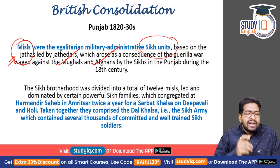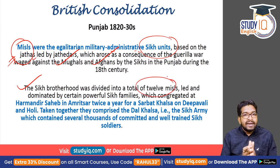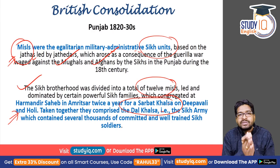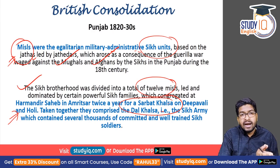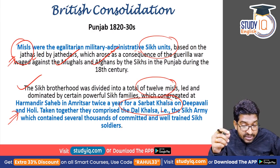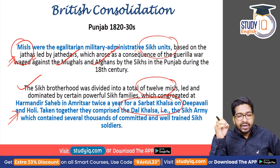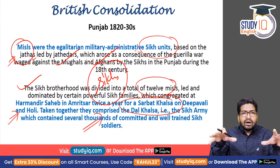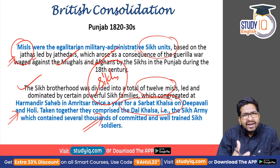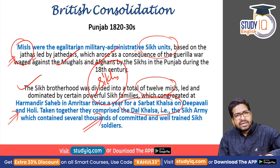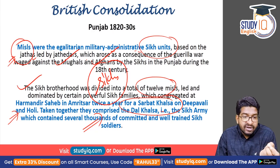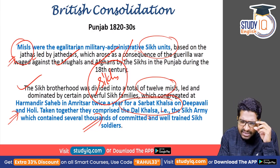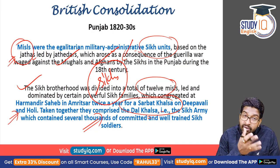The Sikhs were organized through 12 misls — egalitarian military-administrative units under different jathedars. These 12 misls were expert in guerrilla warfare and congregated twice yearly at the Harmandir Sahib in Amritsar — once on Diwali and once on Holi — in an assembly called Sarbat Khalsa. Together, they formed the Dal Khalsa, comprising thousands of trained Sikh warriors. This was more of a loose family than a formal confederation, but they were connected strongly through the Sikh religion.